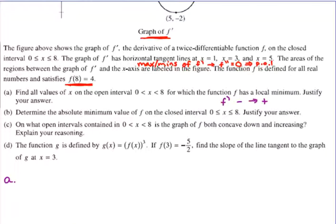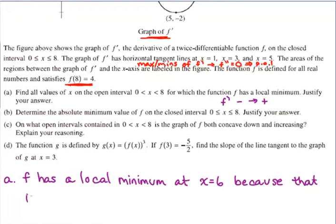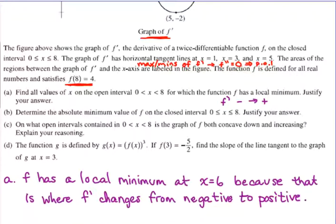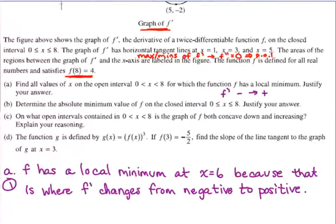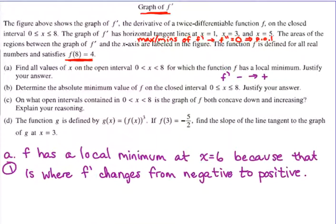So you would say f has a local minimum at x = 6. That is where f prime changes from negative to positive. Now, if you want to add to that, that also means that f would change from decreasing to increasing, therefore creating a minimum. You can, but you really, really don't have to, okay? So really, that's it. It's a one-point part answer with justification. So you can't just say x equals 6, and you have to have the correct justification, and that's because that's where f prime changes from negative to positive. Okay, but just one point there.